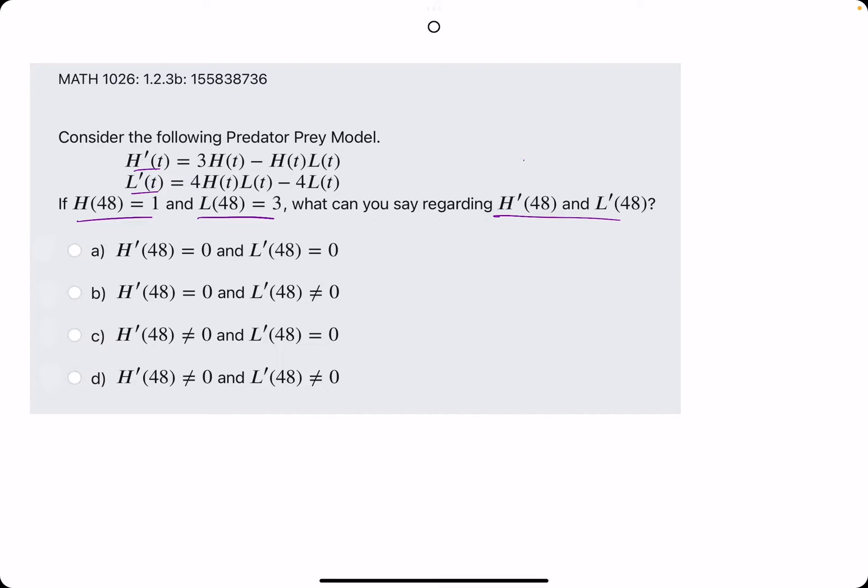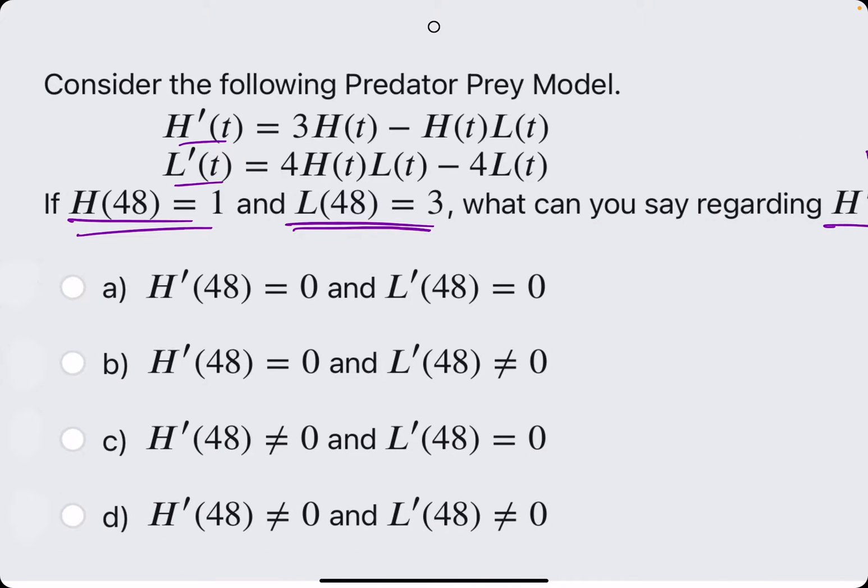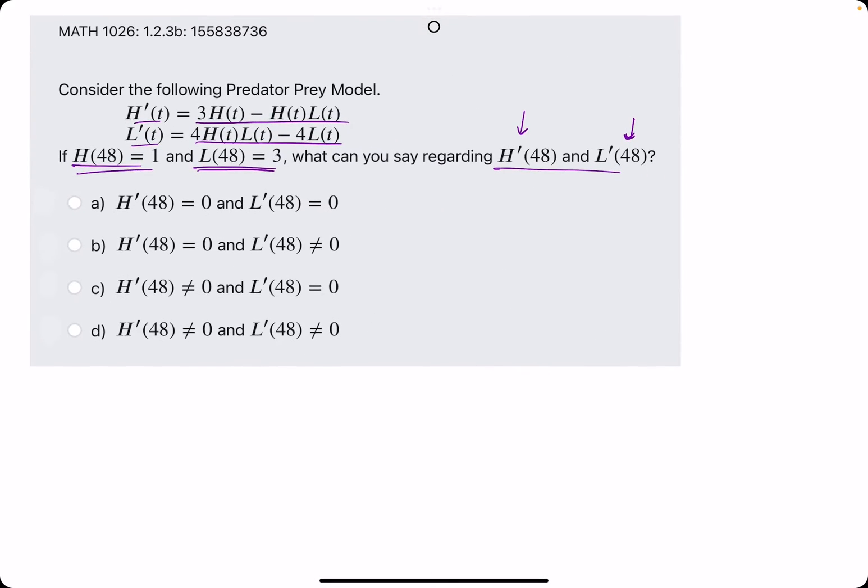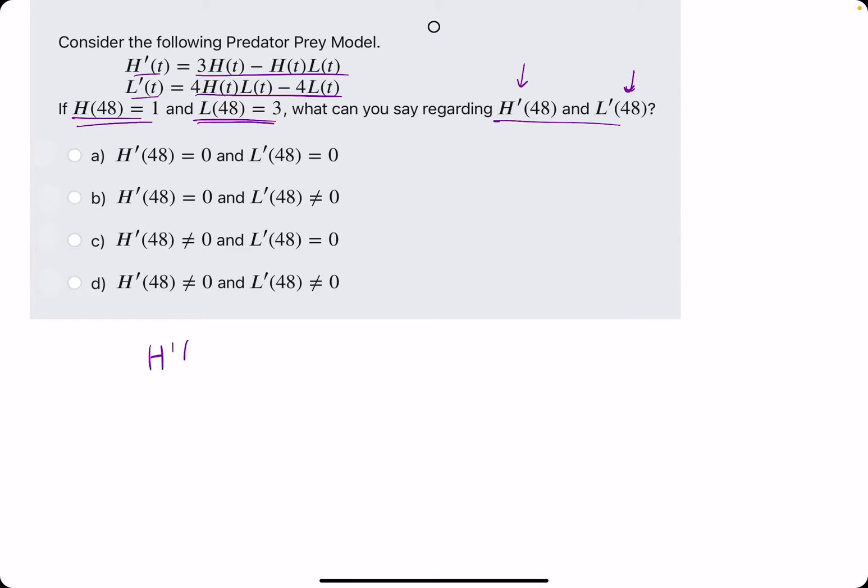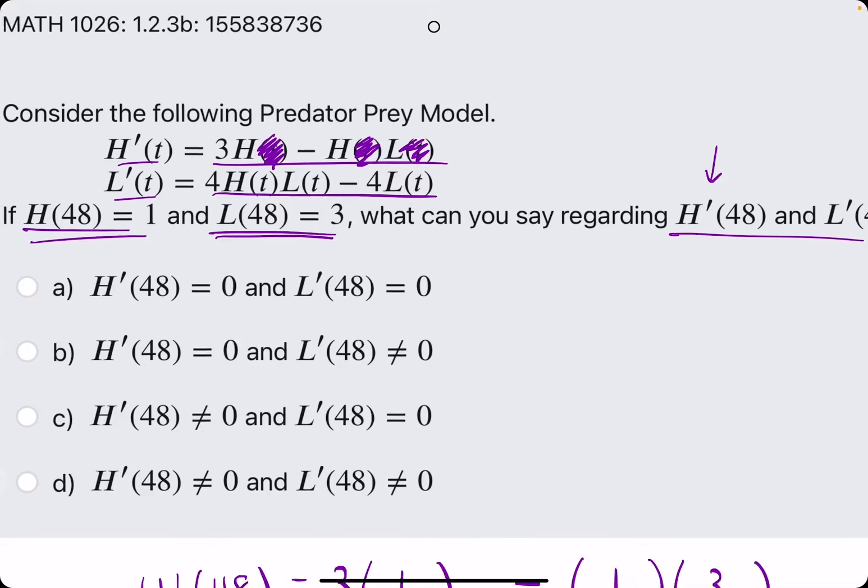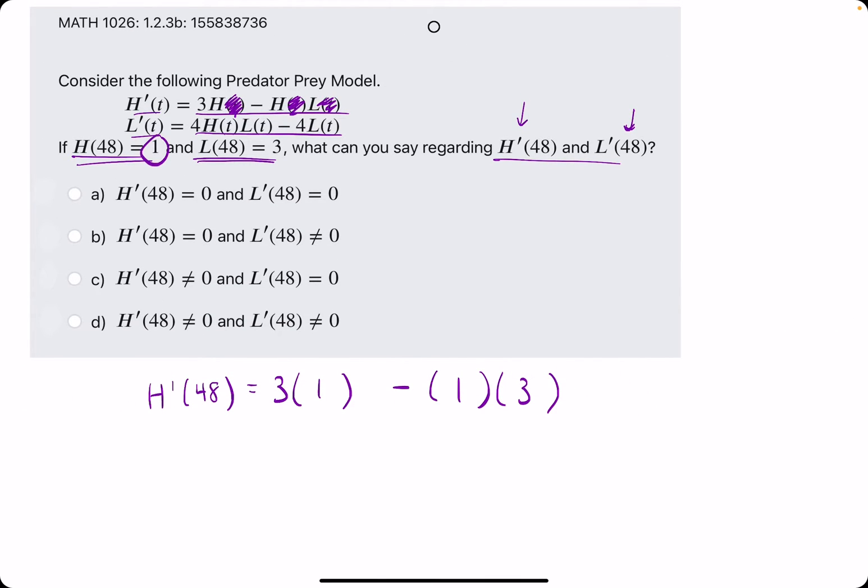Well, if we want to calculate H' and L' at 48, we will just plug in the H and L values that they give us at time 48, and we'll plug them into these differential equations, H' and L'. So let's not waste any time. H' at 48 will be 3 times H of 48, which is 1, minus H of 48, which is 1, times L of 48, which is 3. So basically, if we simplified it, it would basically just be like 3H minus H times L. So that's what we've done here using H and L.